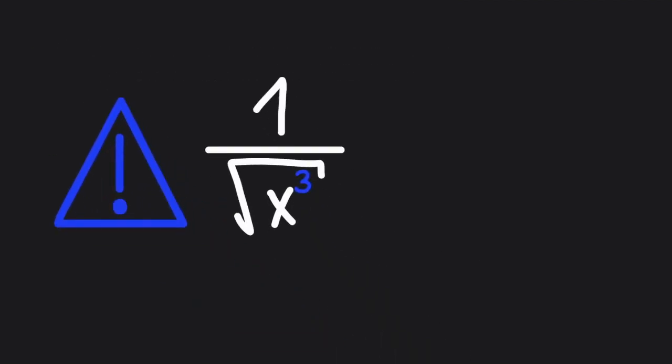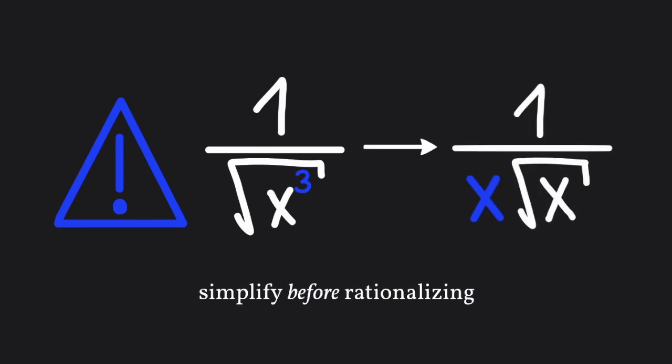There's one thing that's very important. At the beginning, when we still have the square root in our denominator, we need to check if we can simplify the denominator. For example, here you can see 1 over the square root of x to the third power. Now, x to the third power is x square root of x. So make sure to simplify this before rationalizing, because otherwise you probably won't come to the solution.